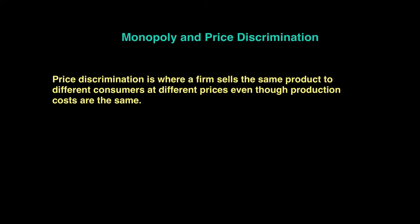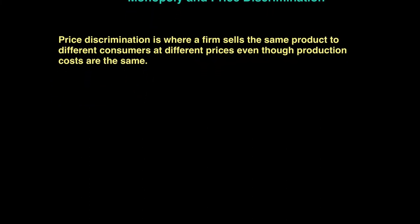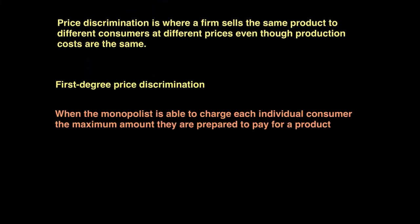There are three forms of price discrimination. The first form is called first degree price discrimination. This occurs when the monopolist is able to charge each individual consumer the maximum amount they are prepared to pay for a product — in other words, what they are willing to pay.